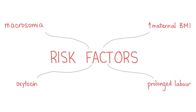Shoulder dystocia can be recognised by the turtle-neck sign, which is where the fetal head retracts back into the pelvis. The delivery will also be prolonged, and following extension of the fetal neck to deliver the head, the fetus remains in the occiput anterior position. These are all signs of shoulder dystocia, which is an obstetric emergency — you must call for help and advise the mother to stop pushing.